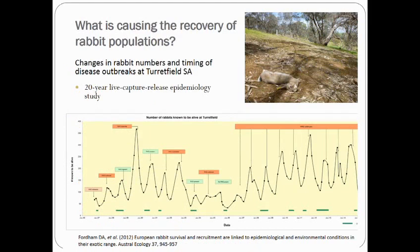The first official release of RHD in South Australia occurred at the Turretfield Research Centre near Gawler. Ron Sinclair, Dave Peacock, and John Kovaliski have since maintained a very intensive epidemiological monitoring program there, which has provided a fantastic picture of how the disease is affecting rabbit populations and led to interesting scientific collaborations with local, interstate, and international collaborators including Damien Fordham's group at the University.